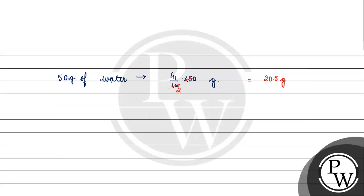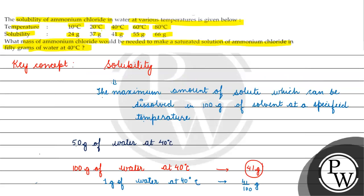So in 50 grams of water, 20.5 grams of ammonium chloride will be needed to make a saturated solution. I hope you understood it well. Thank you.